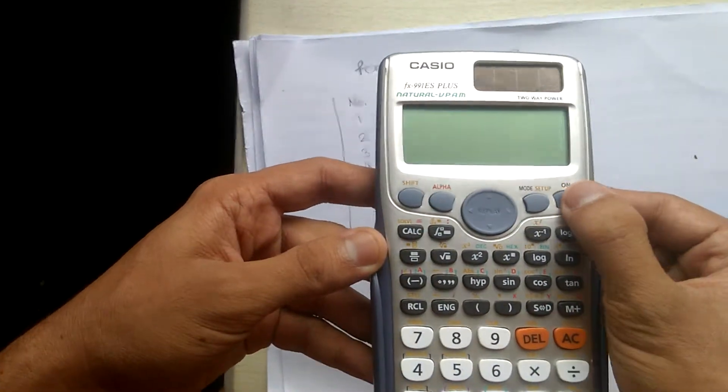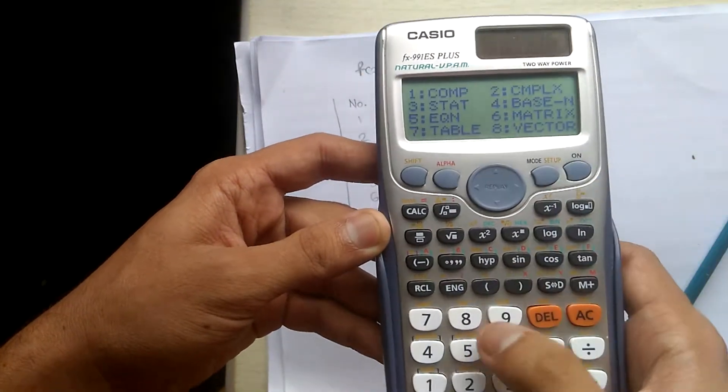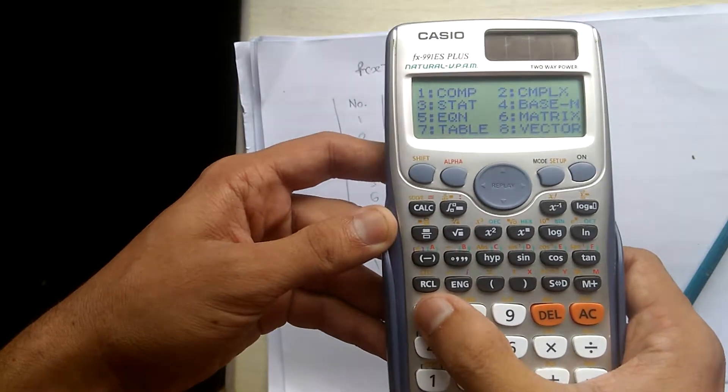Firstly, turn it on, then change the mode using this button. We have the table option at number 7, so press the number 7 button.